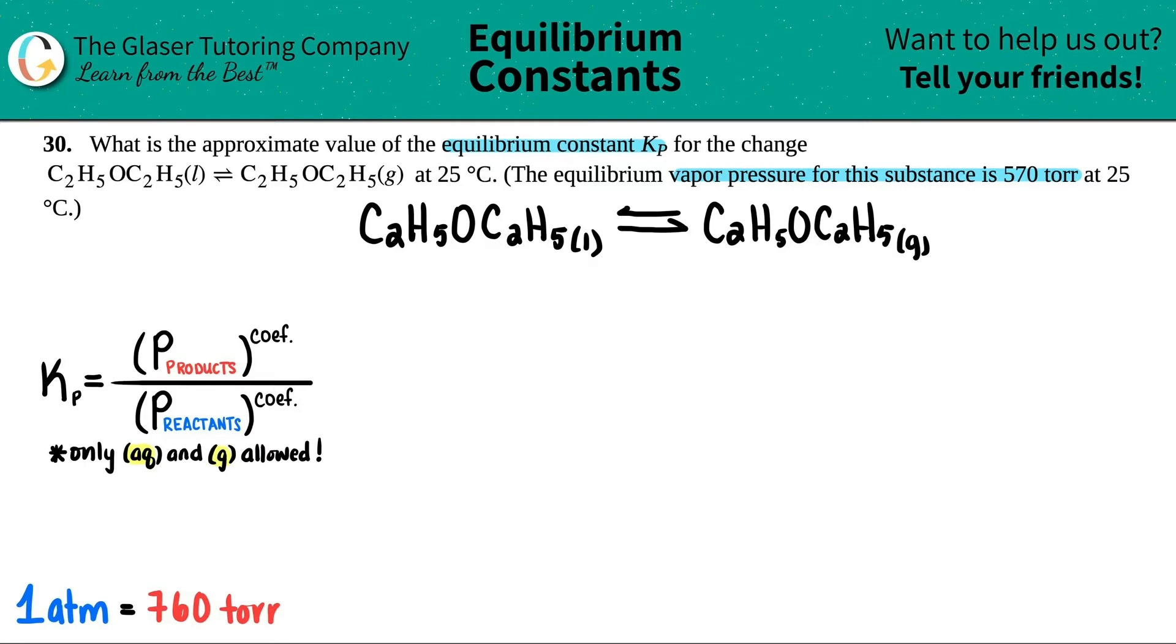Only aqueous and gases are allowed, so look at those states first. Uh-oh, I have a liquid - that's not allowed. Only aqueous and gases are allowed. So since I don't care about this, this goes bye-bye, can't use it. But here I have a gas value, so I can use this in my Kp formula.